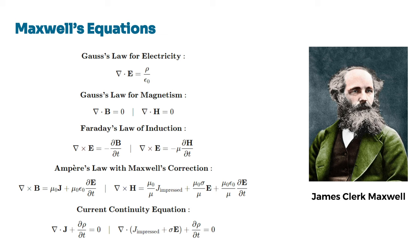In these equations, E represents the electric field, H is the magnetic field, mu is the permeability, epsilon is the permittivity, and sigma is the conductivity of the medium. These equations describe how a time-varying magnetic field induces an electric field, which is also known as Faraday's Law, and how a time-varying electric field, as well as currents, induce a magnetic field, which is known as Ampere's Law.